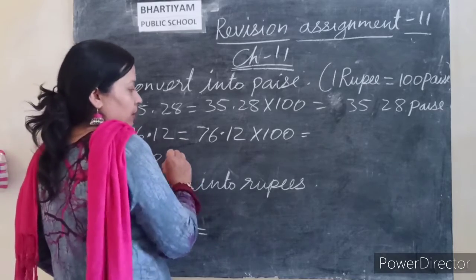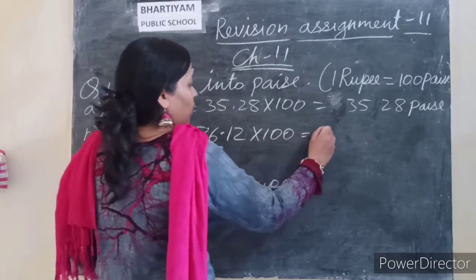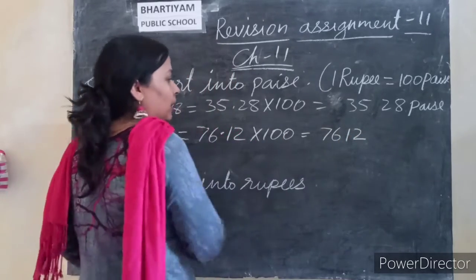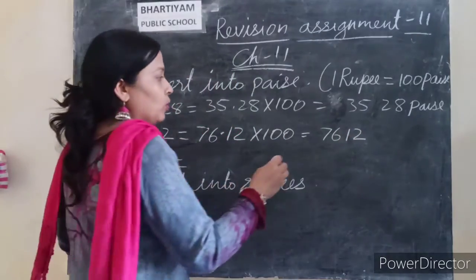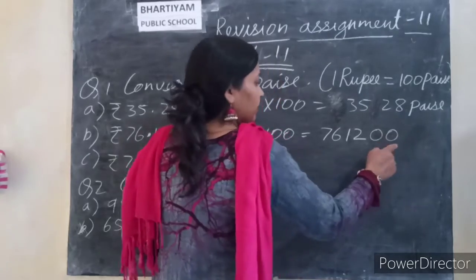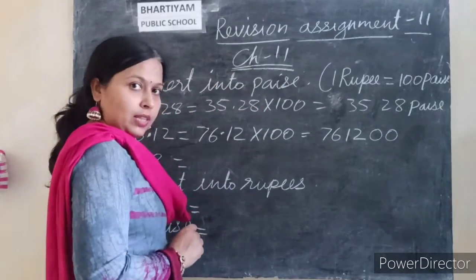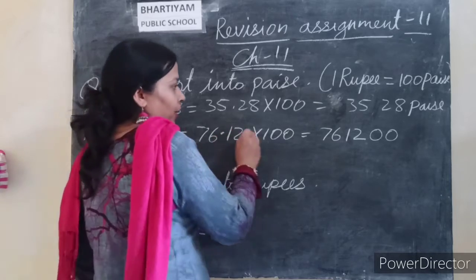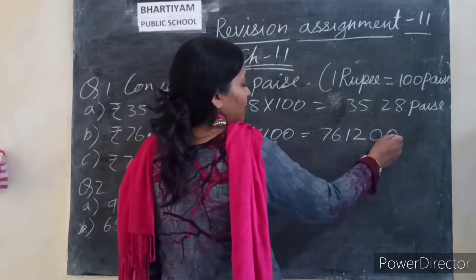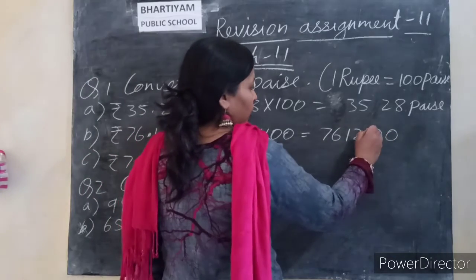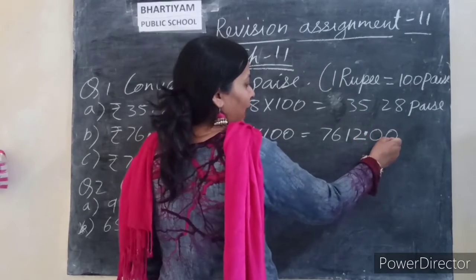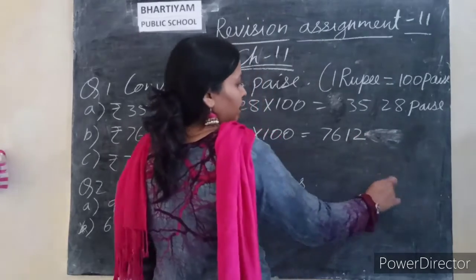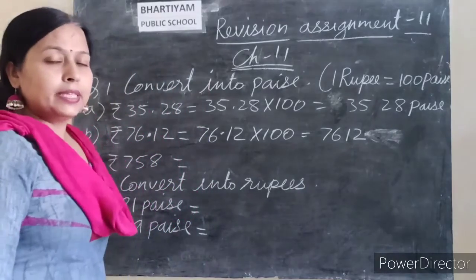Understand it this way: if we multiply any number by 100, two zeros are added to it. And if we place a point two digits from the right, what comes after the point? Zero. So we remove that trailing zero.